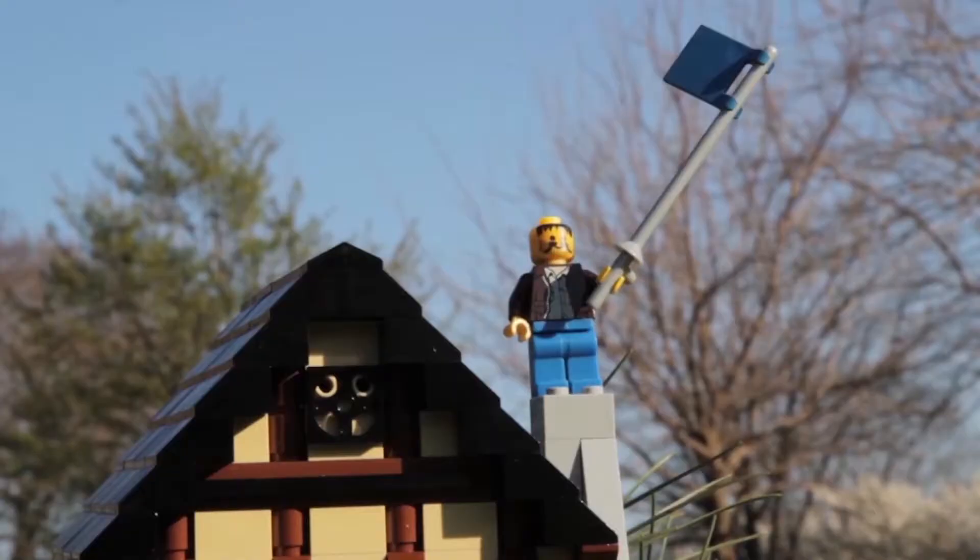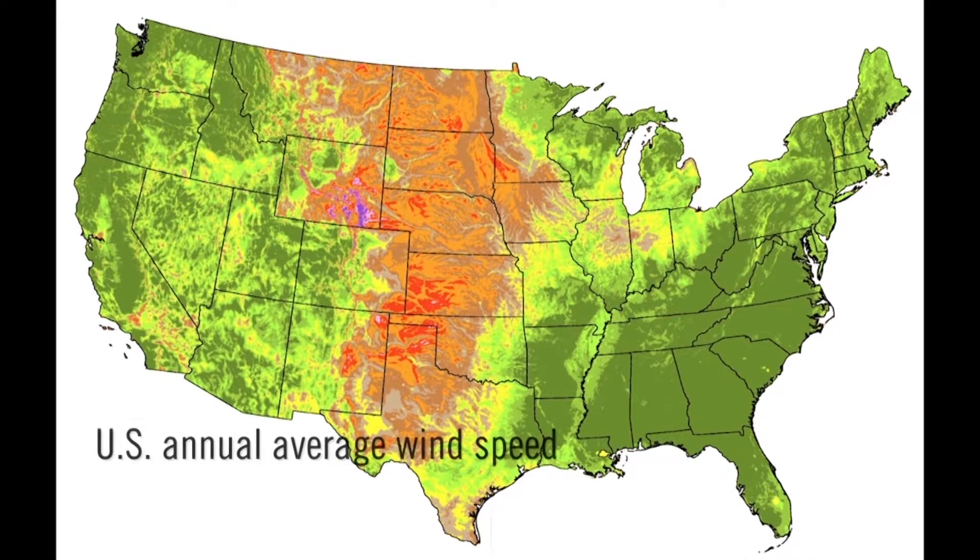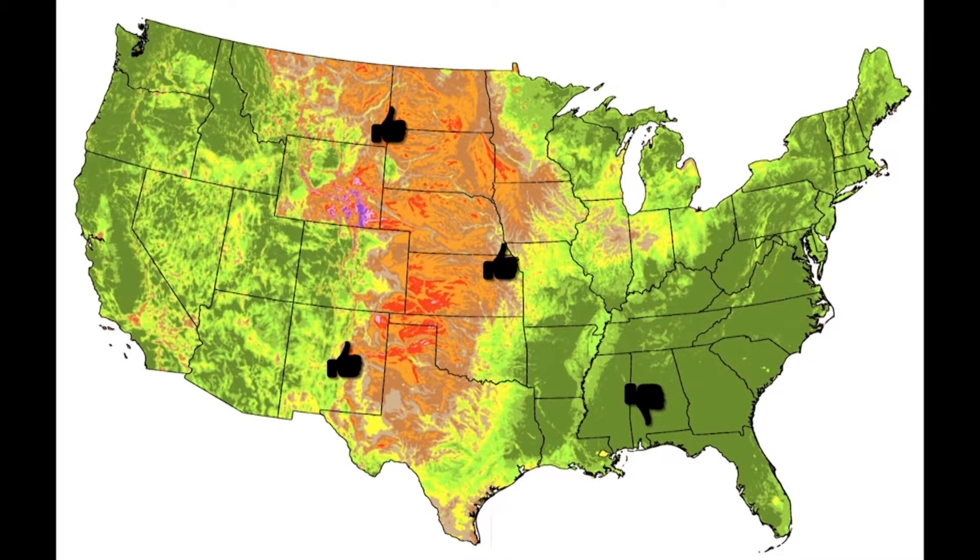But you don't need to spend a year measuring wind speeds at home. The Department of Energy publishes maps of average wind speed across the country at 100 feet, which is the minimum height you'll need to build your turbine. If you're in the light green or warmer colors, you might be a good candidate.